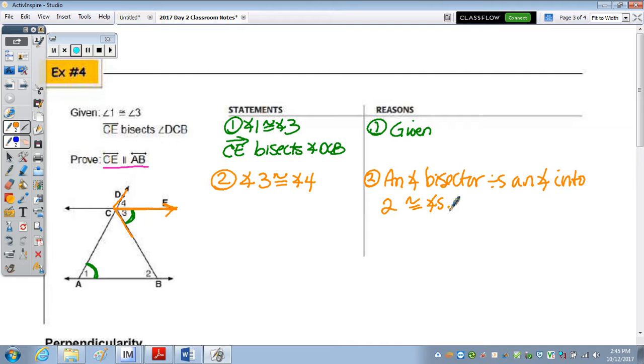Now, let's take a look at these two statements. If 1 is congruent to 3, and 3 is congruent to 4, what do we know to be true by using substitution? 1 is congruent to 4. So angle 1 is congruent to angle 4 by the substitution property. And is that one of our angle pairs? What is the name of that angle pair?